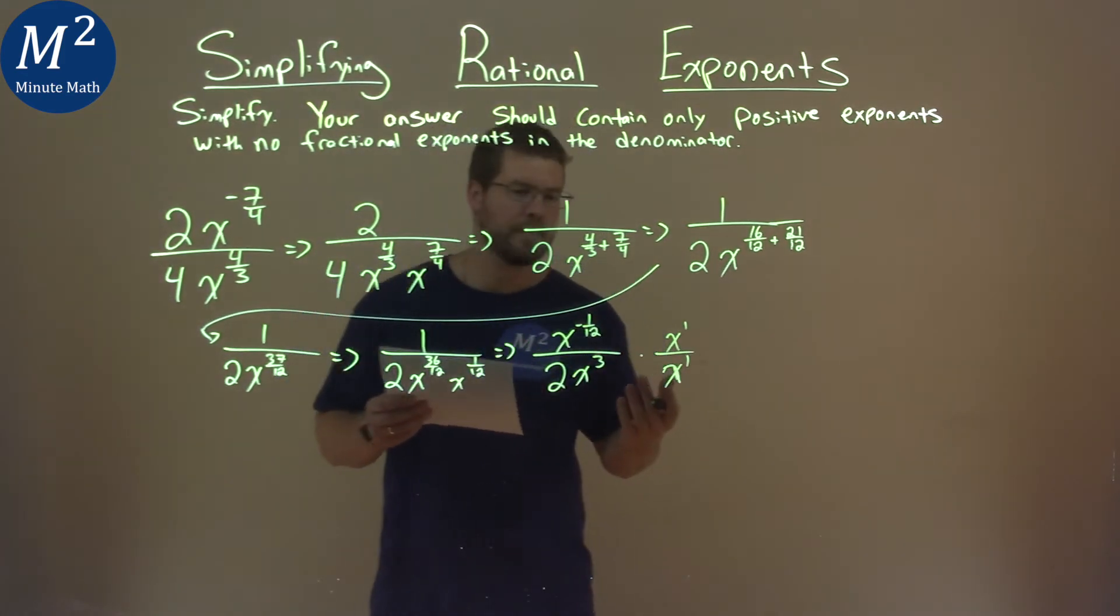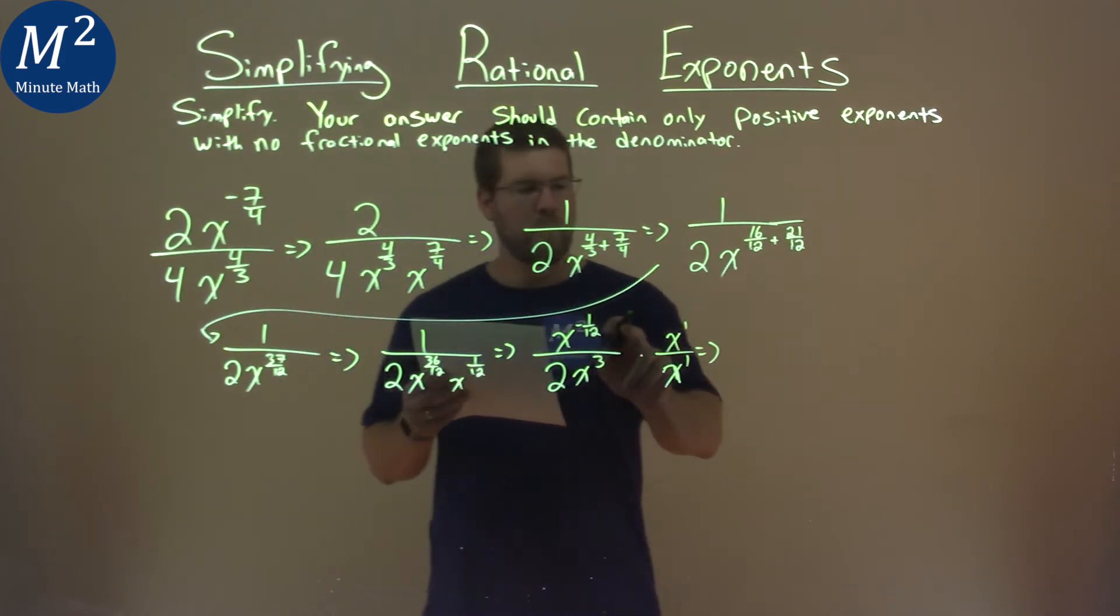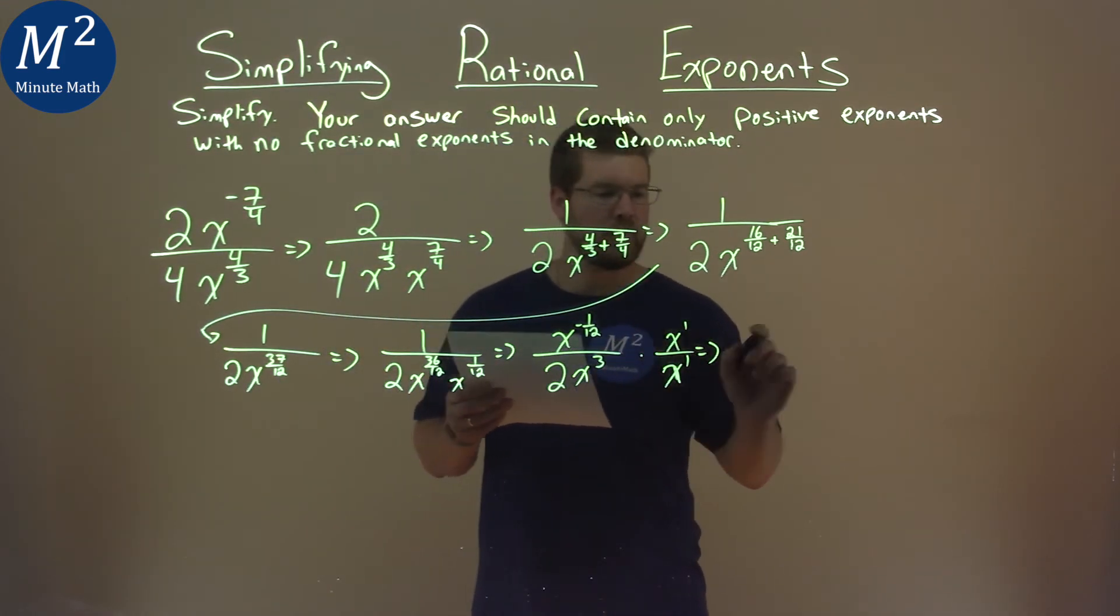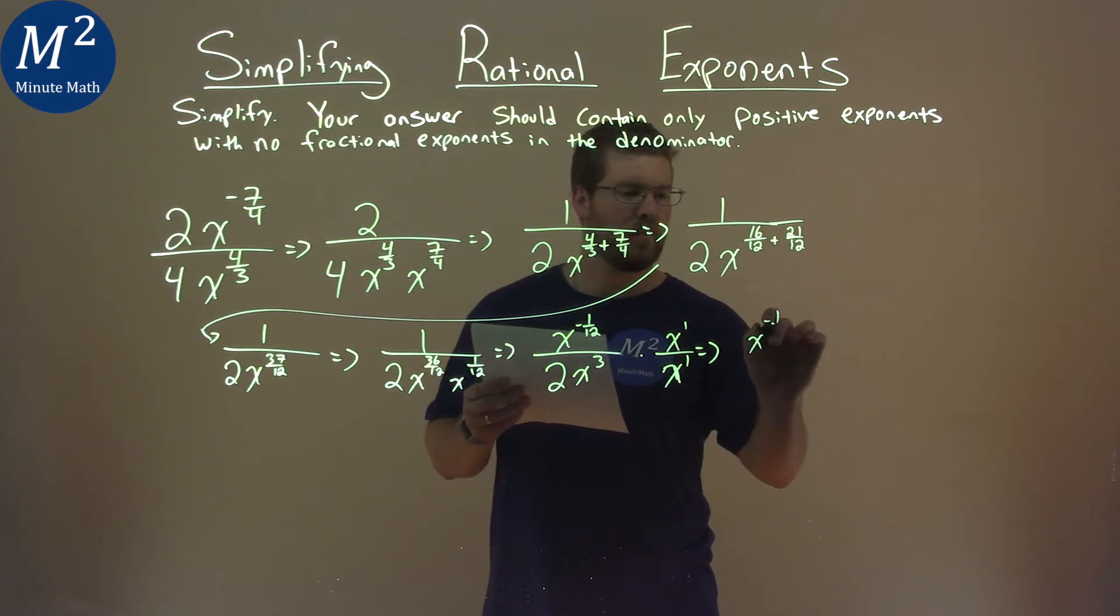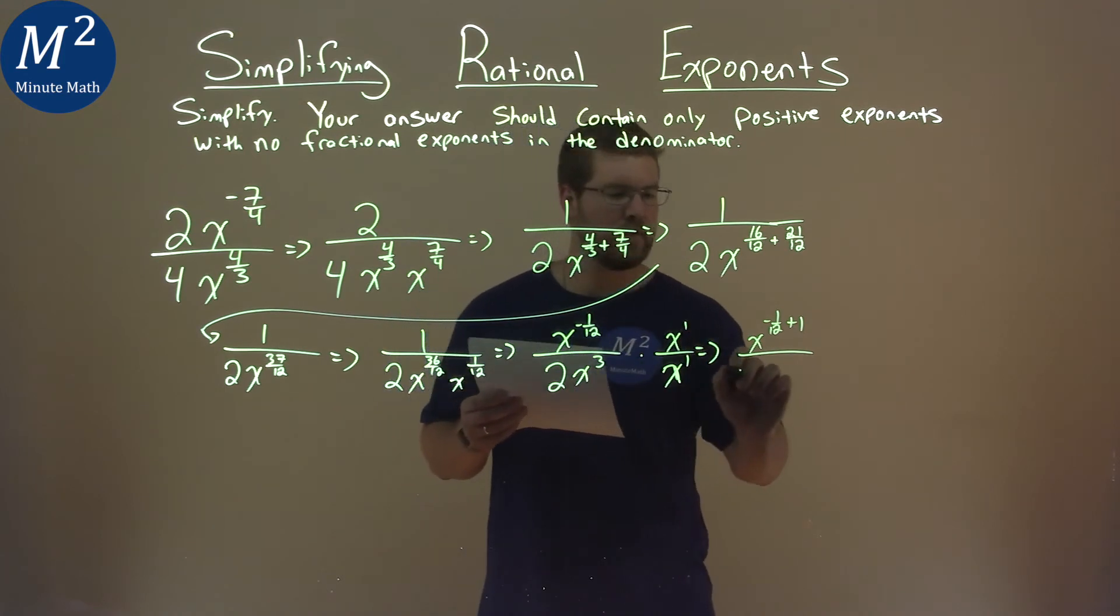What happens here? Well, in doing so, our numerator, remember, we multiply the same base, we add the exponents. We have x to the negative 1 twelfth plus 1. Denominator, same thing, we add the exponents. We have 2x to the 3 plus 1.